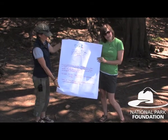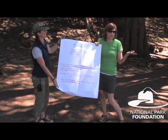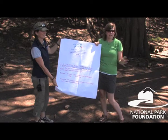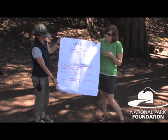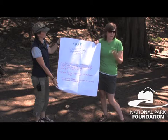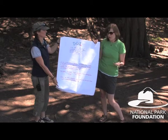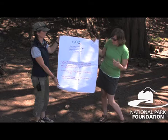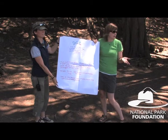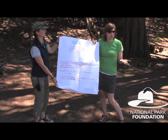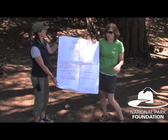Each student does their own dot and then is responsible for getting the dots of three other people on campus — any grade, sixth through eighth. If they just did themselves it would be 90 students; if they each got three other people, it would be 360. If they had dots all around school, all the kids could see it. If they did videos, we can put them in the morning announcements — it would really reach the whole school.